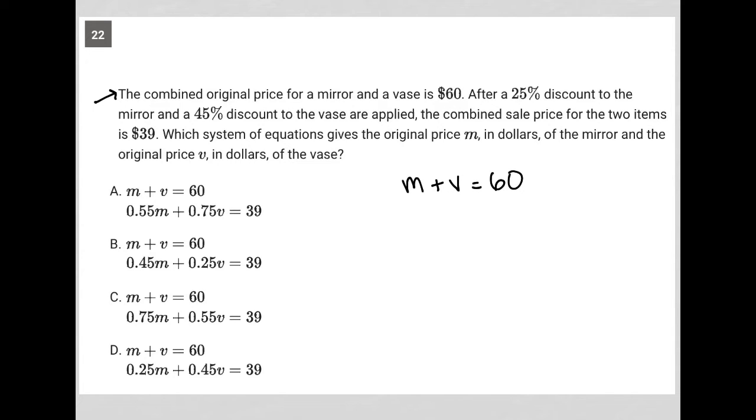After a 25% discount to the mirror and a 45% discount to the vase are applied, the combined sale price for the two items is $39. So now we have a new equation. After a 25% discount, how much are we paying if the price has been discounted by 25%?